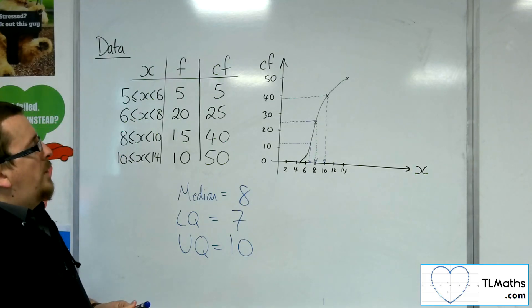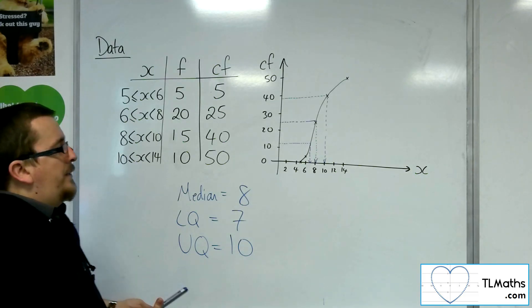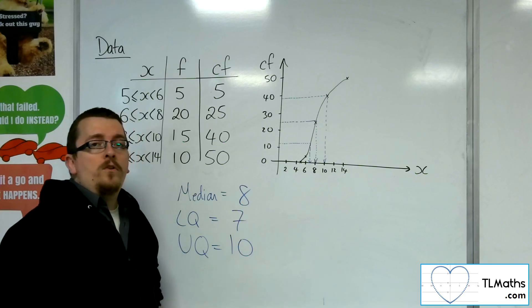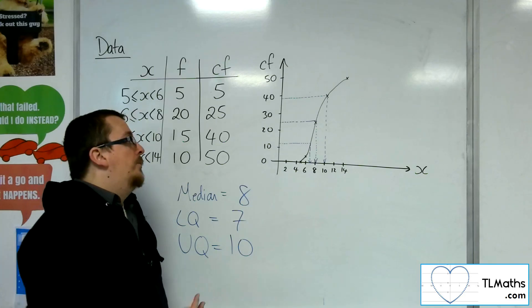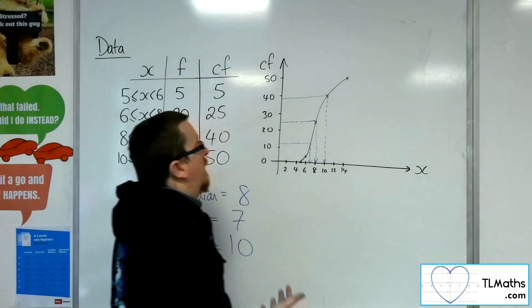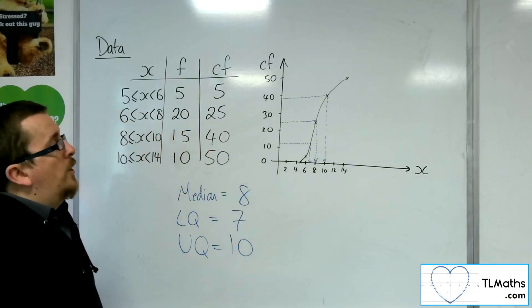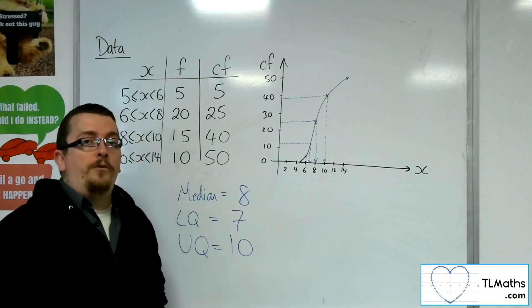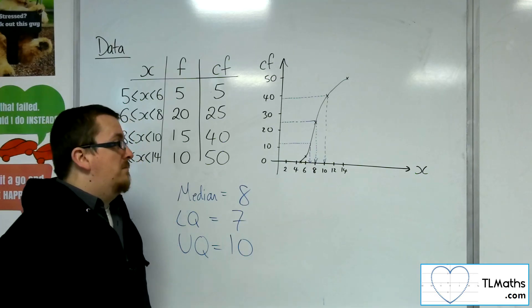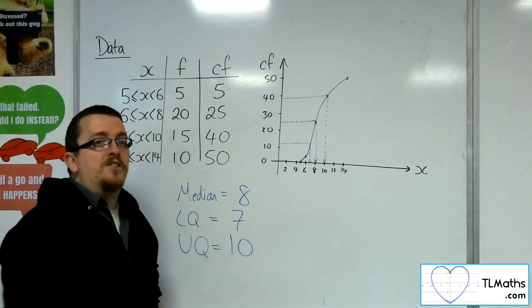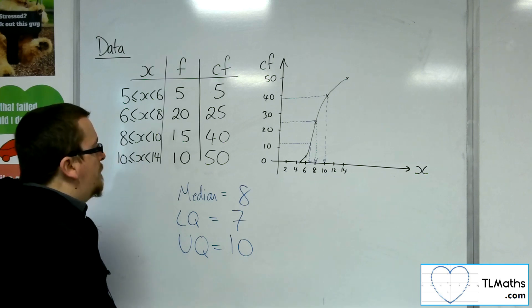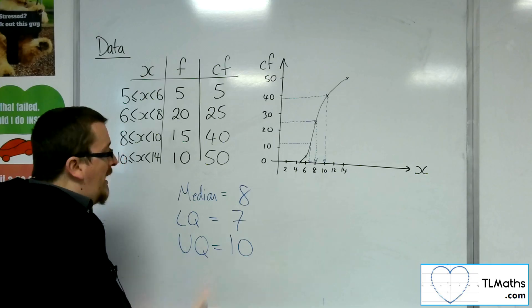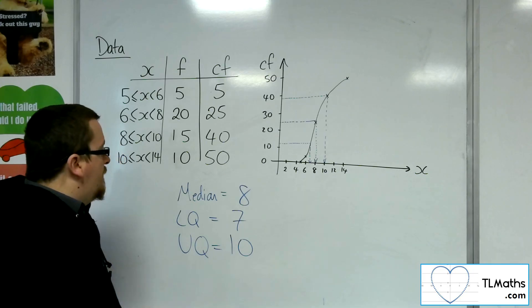As you're reading off those values, you're trying to be as accurate as you can, but it's based upon the curve that you've drawn. As long as you've drawn your curve correctly and are reading off accurately, you might get slightly different results to somebody else — it's a ballpark estimator figure, so don't worry if it's 0.1 off. That's how we find those three values.